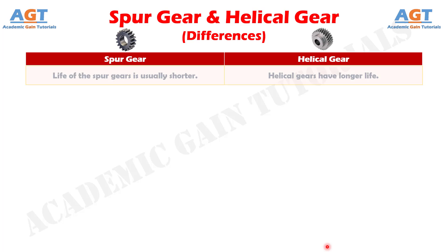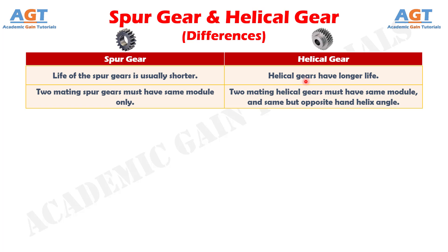Difference number 7: Life of the spur gears is usually shorter, whereas helical gears have longer life. Difference number 8: Two mating spur gears must have the same module only, whereas two mating helical gears must have the same module and the same but opposite hand helix angle.